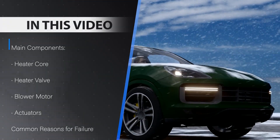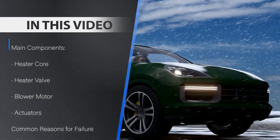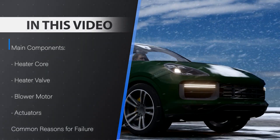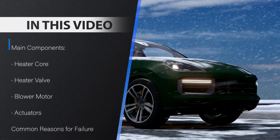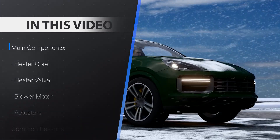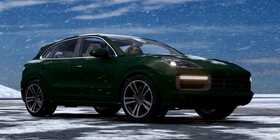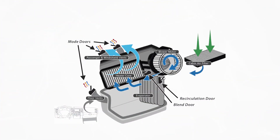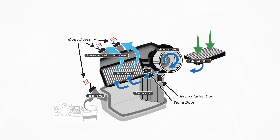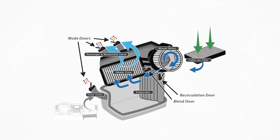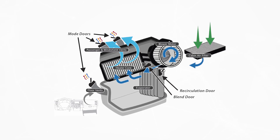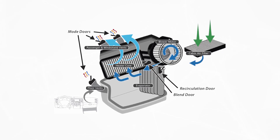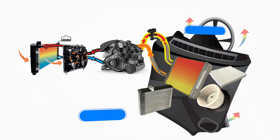In this video we will take a look at the automotive heating system, focusing on how the heater core functions alongside the engine cooling system and air conditioning system, as well as common reasons for failure. The heater core can be located near the evaporator, typically in the same HVAC housing behind the dash. If the vehicle has rear air, the rear HVAC unit will also include a rear heater core.